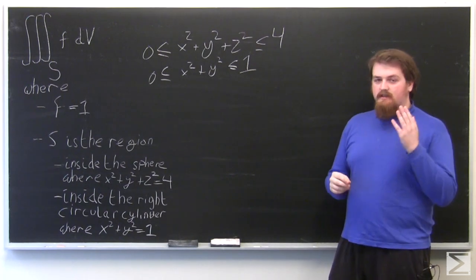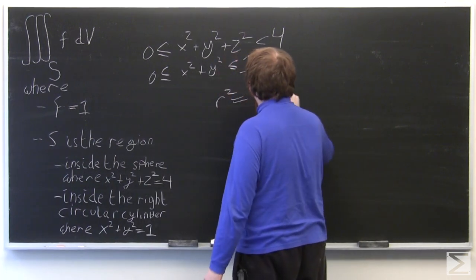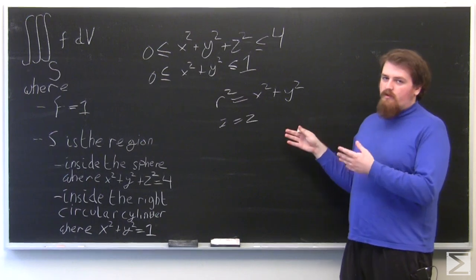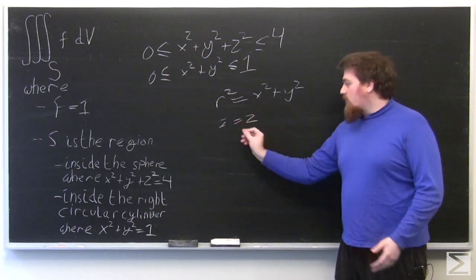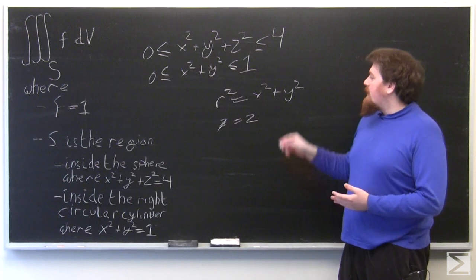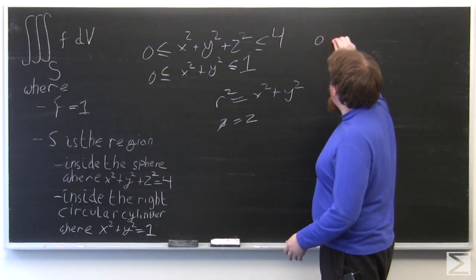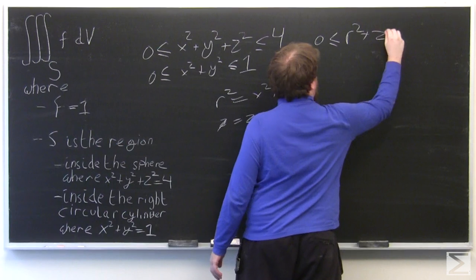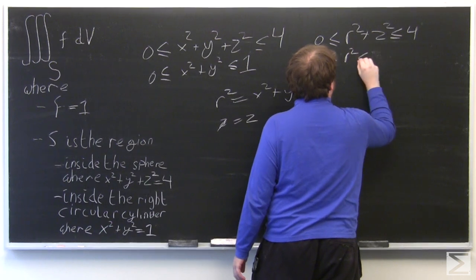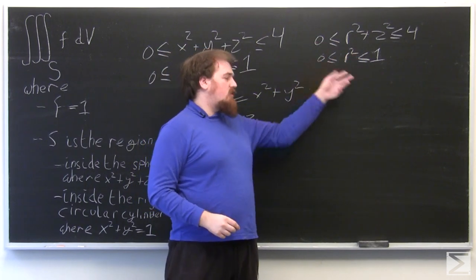Now we want to work in cylindrical coordinates. We recall that in cylindrical coordinates, r² = x² + y², and z = z, since z is the same in Cartesian and cylindrical coordinates. Making this substitution into the two inequalities, we reach 0 ≤ r² + z² ≤ 4, and r² ≤ 1.